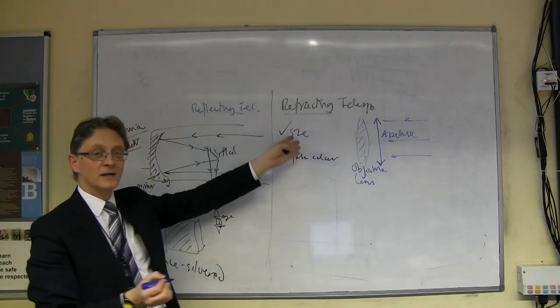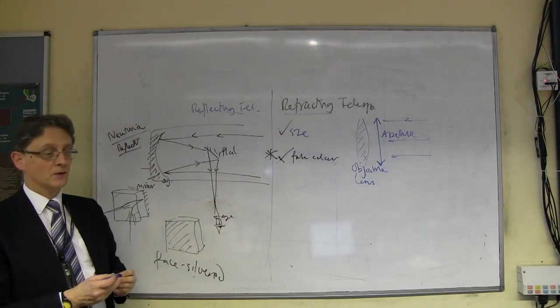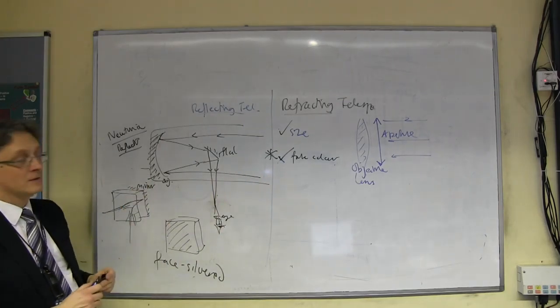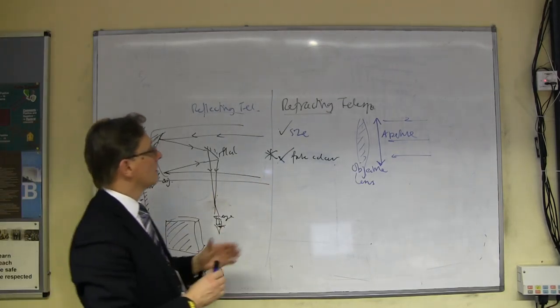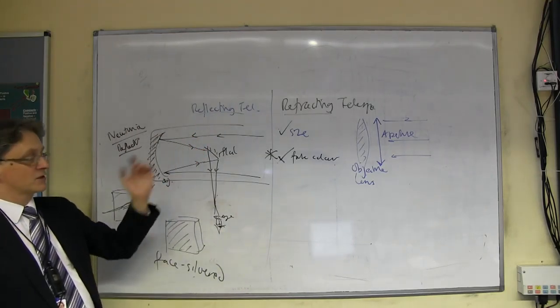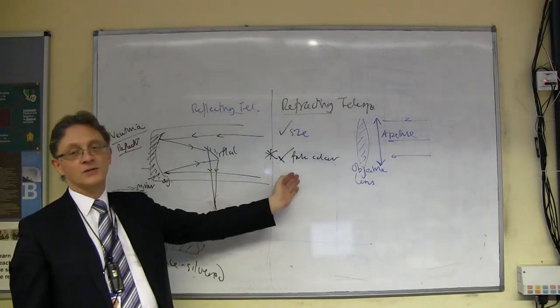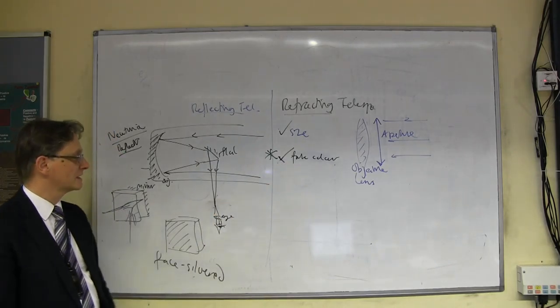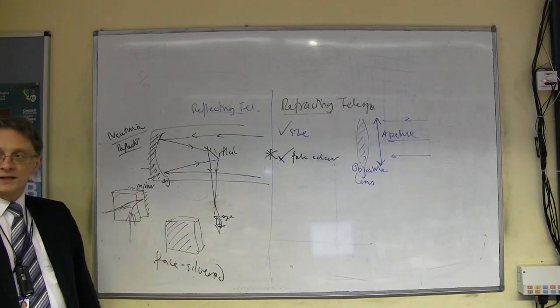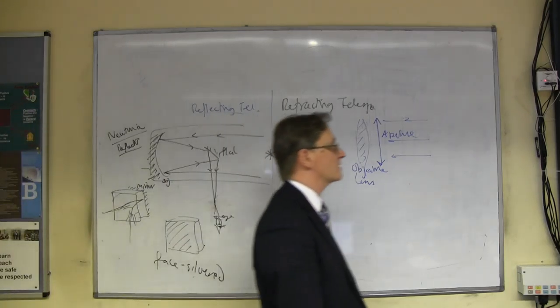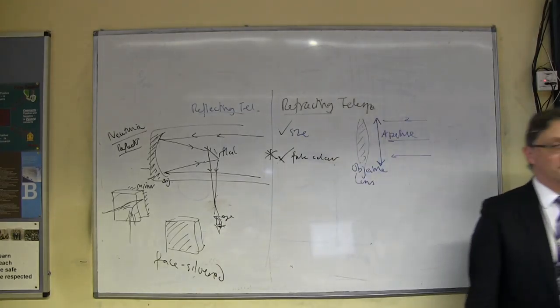So the eyepiece lens goes down there. Our formula, F objective over F eye, works exactly the same. So again, you want very big, very long focal length, normally, mirrors. But as I've said, it solves the size problem. Making large versions of this is quite easy. It also solves the false colour problem. Does that sort of make sense? And so that's the second type of telescope you need to know about called a Newtonian reflector.